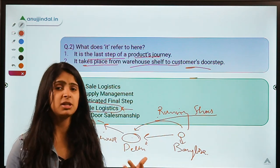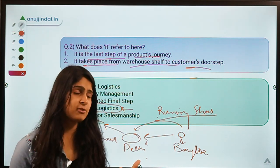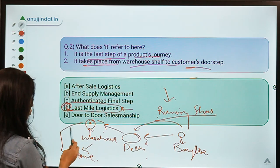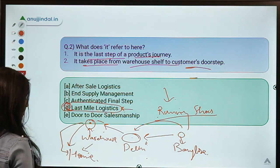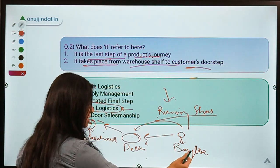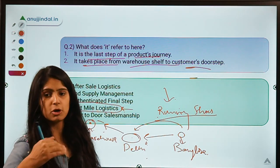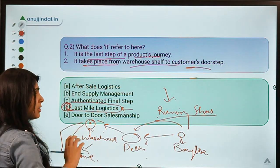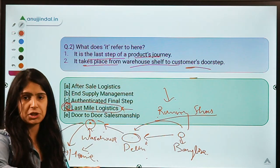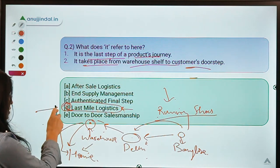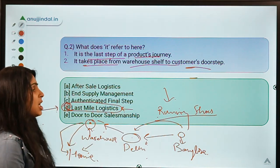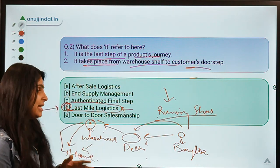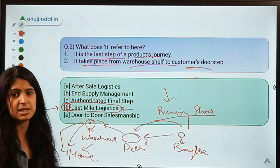In remote areas last mile delivery becomes really expensive because the company may have to ship just one product — your shoes — from their warehouse to your home. When too many products are shipped in one go, the cost per product goes down, but when only one product has to be transferred the cost of transportation is very high. That is why many companies do not deliver to some remote areas and are more comfortable delivering to metro cities.